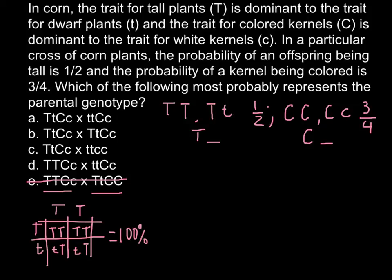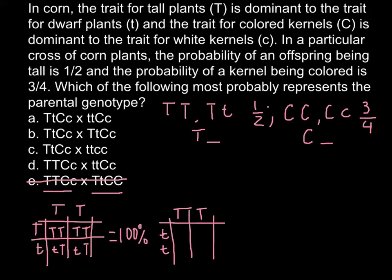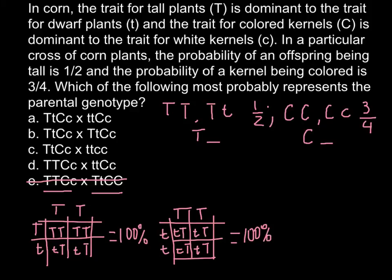Let's move to answer D. We have TT crossed with tt. Drawing a Punnett square with TT on one side and tt on the other, we get tT, tT, tT, tT — once again 100% of the progeny from such a cross would be tall plants. Answer D also doesn't meet our requirements.